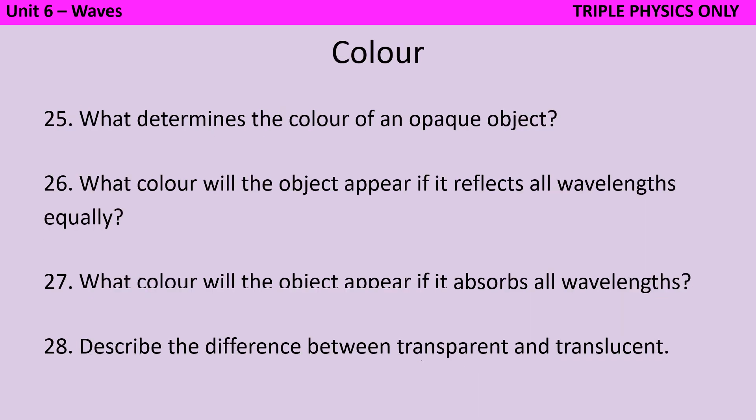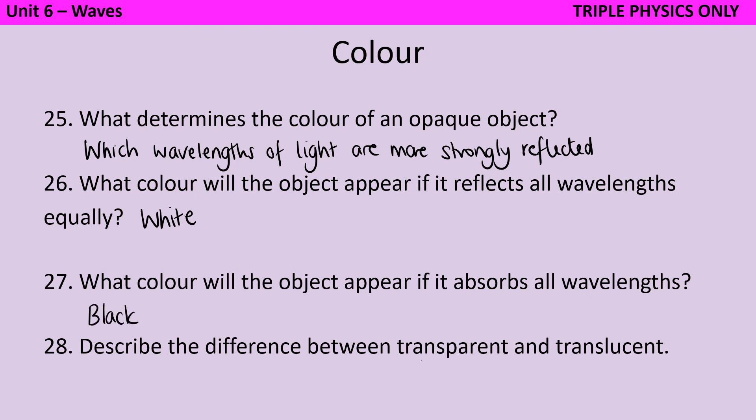As we've just touched on, the colour of an opaque object is determined by which wavelengths of light it is reflecting. If an object reflects all the wavelengths equally, then it will appear white. And if it reflects none of them, it will appear black. Transparent objects transmit all of the light that goes onto them. So in other words, all light is able to pass through that object, whereas a translucent object is only going to transmit some of it.